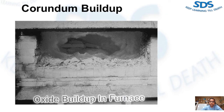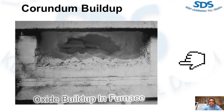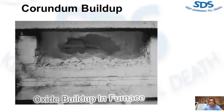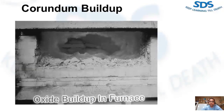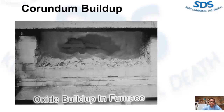Corundum is extremely difficult to remove once it forms. This image shows a furnace that has its capacity severely reduced by corundum buildup. It is much easier to clean corundum accretion from the furnace during early stages, but considerable care must be taken not to damage the underlying refractory and to thoroughly remove debris from the cleaning operations.